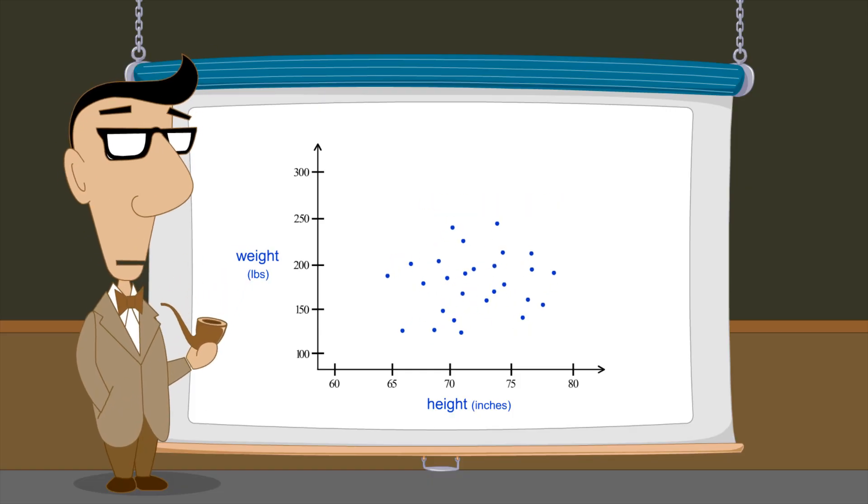Or, if no trend between height and weight was apparent, we would say they were uncorrelated.